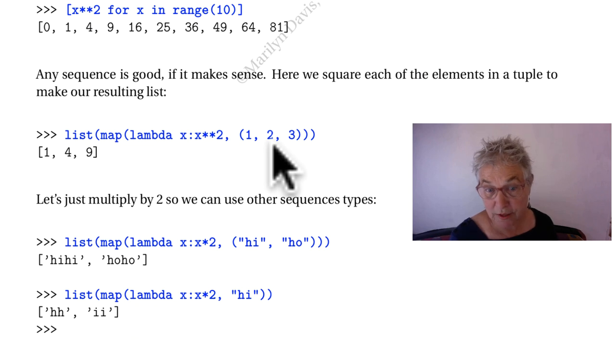This one shows you that a tuple is just as good as a list here. I'm going to change my lambda to be just times 2 so that I'll show you the result of putting in a tuple of strings. There they are. Here I'm just putting in one string but that's a sequence so we get h h i i.